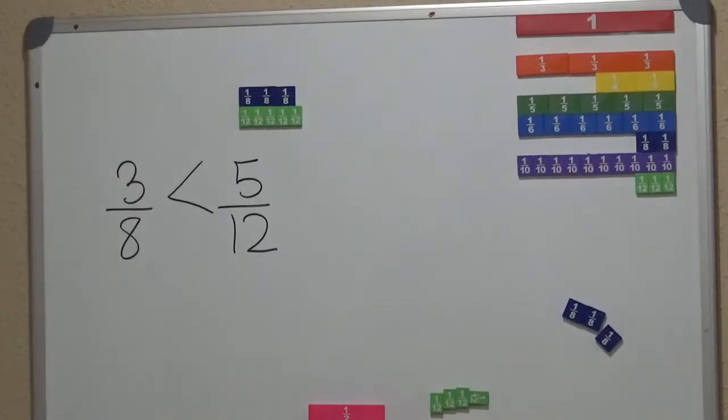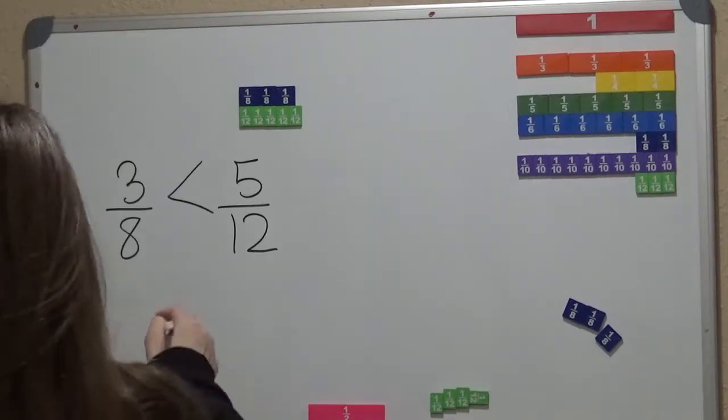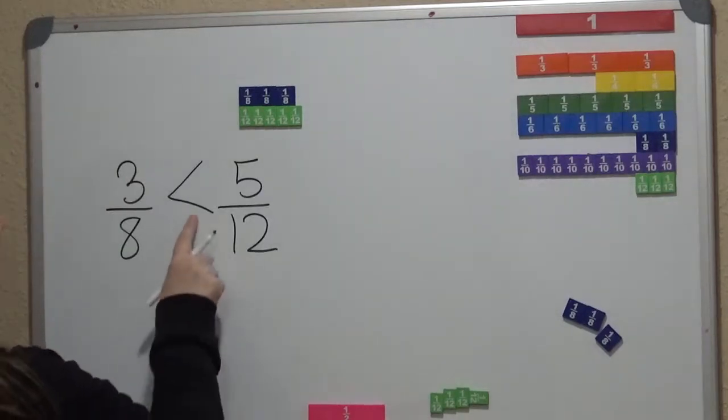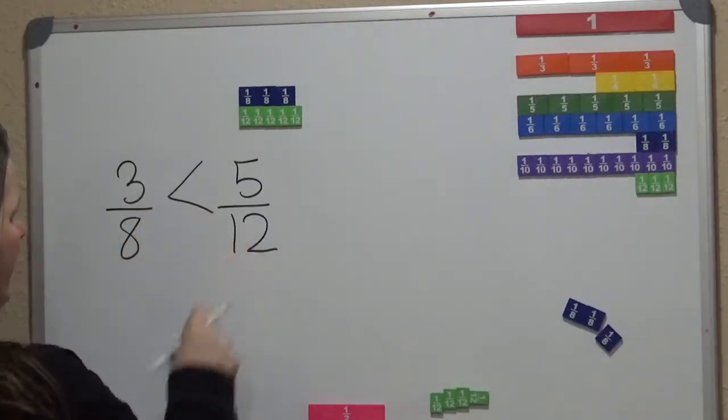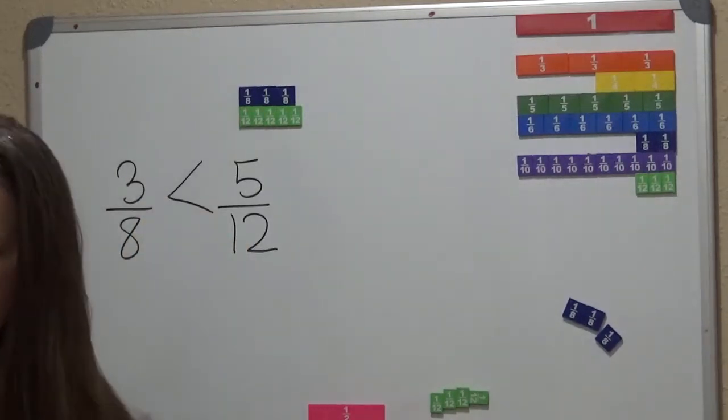Now, let me take a look at this to see if there was anything else they wanted to do. Okay, so it says that we need to, using the symbols, okay, so we use the symbol, which is 3 eighths is less than 5 twelfths. Okay, let's go ahead and try another one.